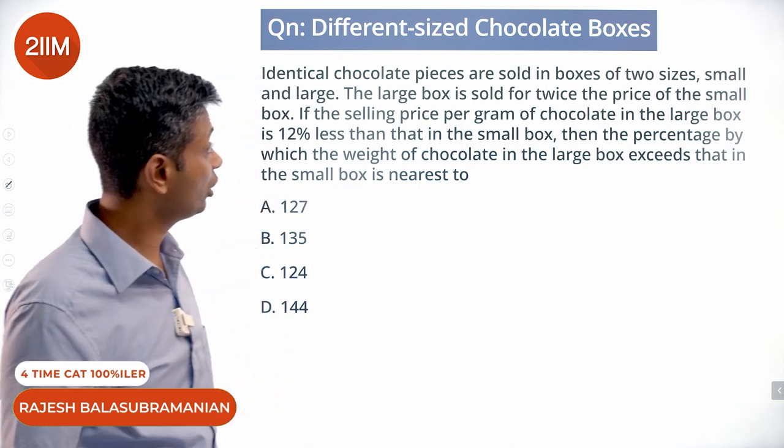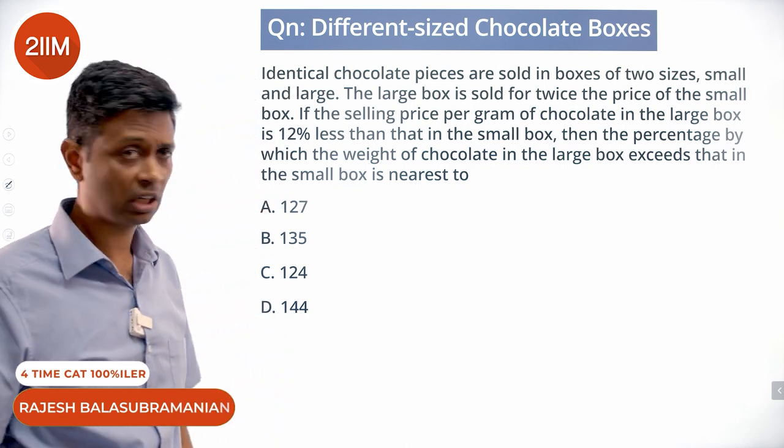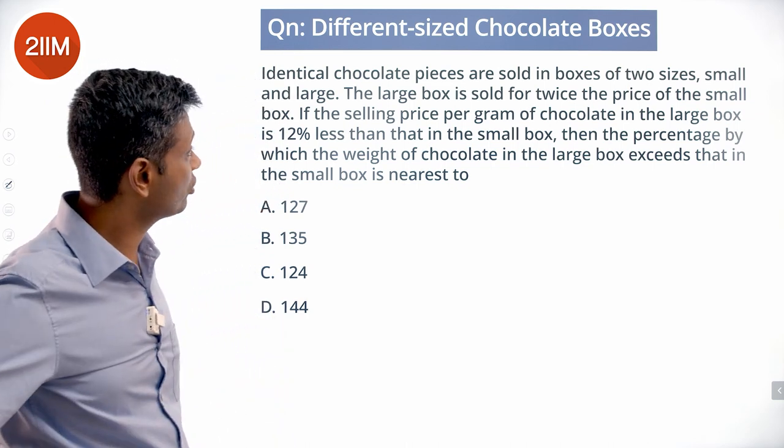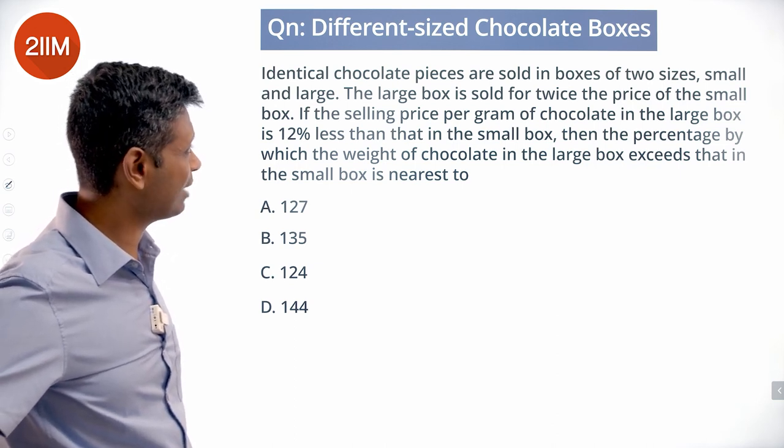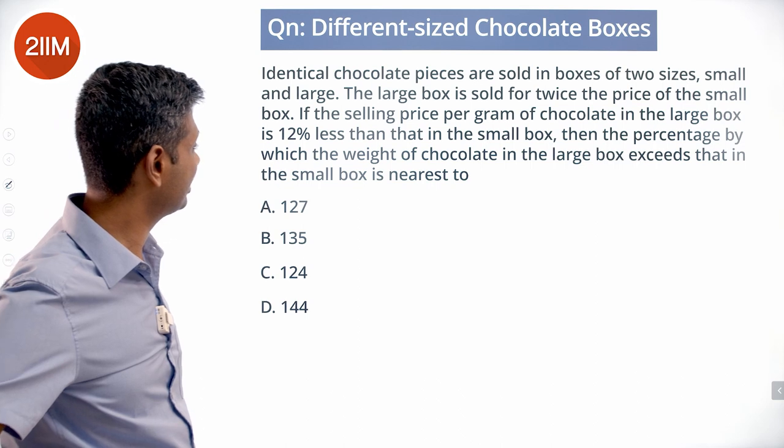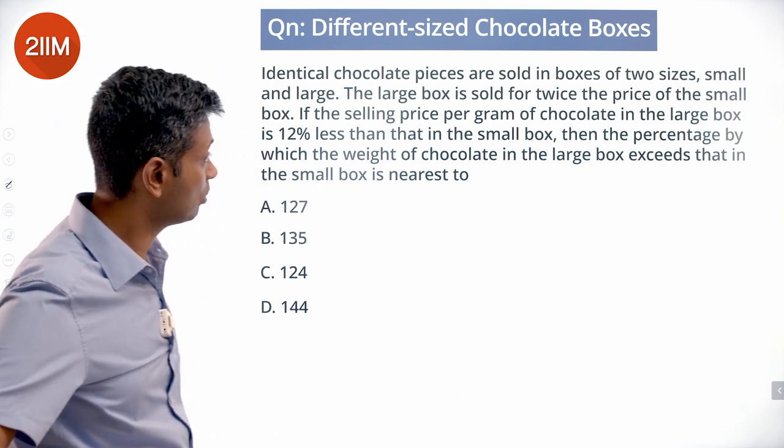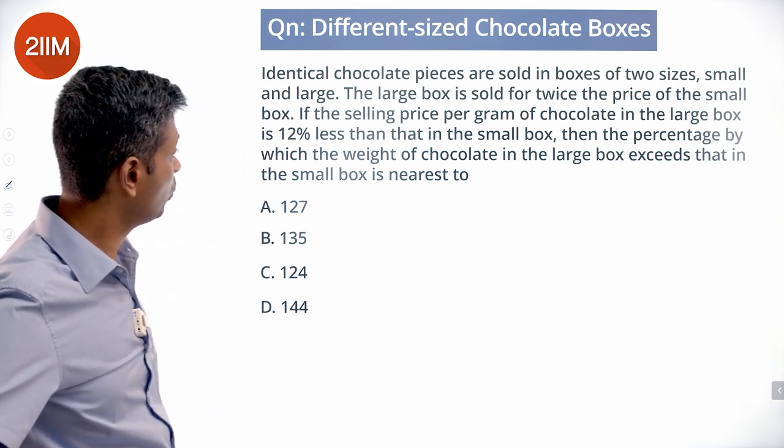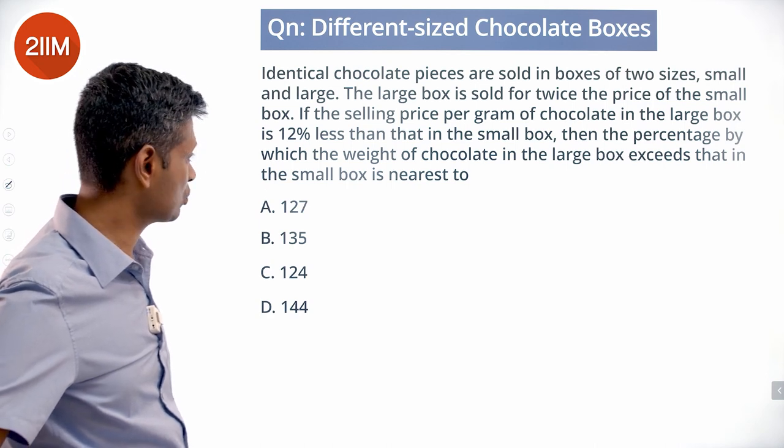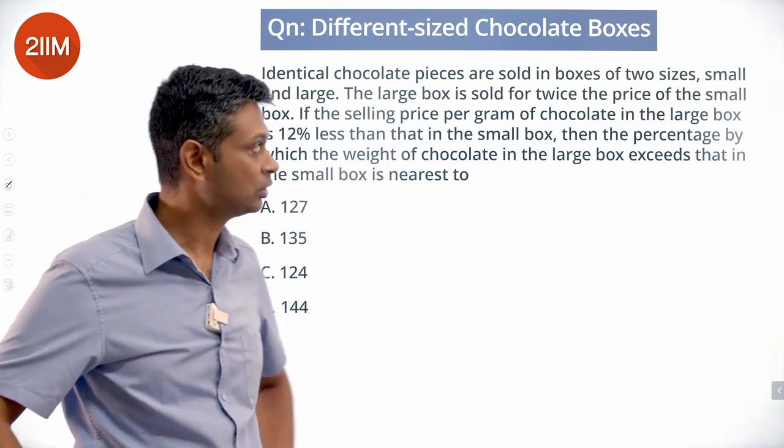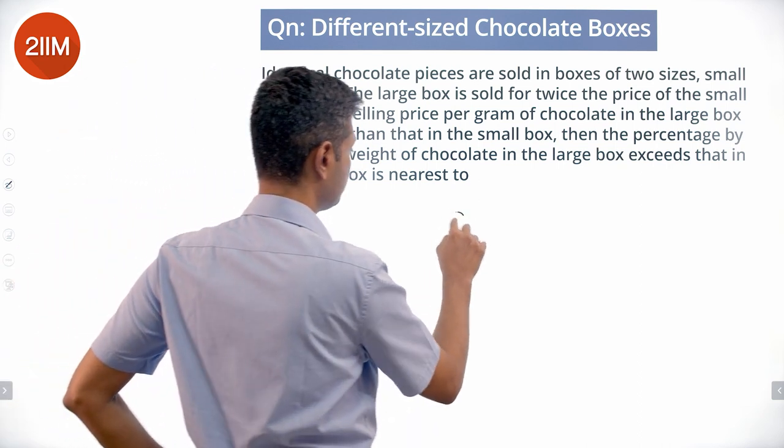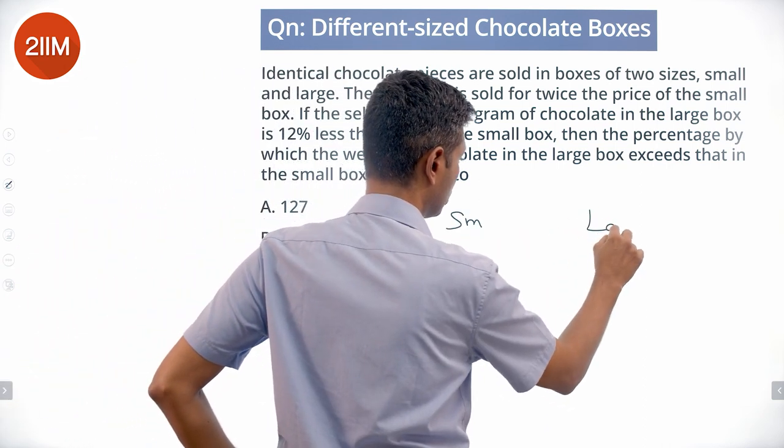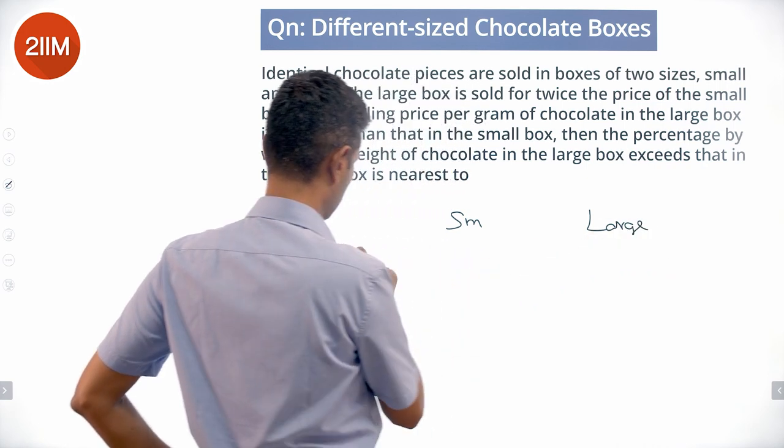Identical chocolate pieces are sold in boxes of two sizes, small and large. The large box is sold for twice the price of the small box. The selling price per gram of chocolate in the large box is 12% less than that in the small box. Then, the percentage by which the weight of chocolate in the large box exceeds that in the small box is nearest to... Very interesting question. It is sold for twice, so small, large, price...